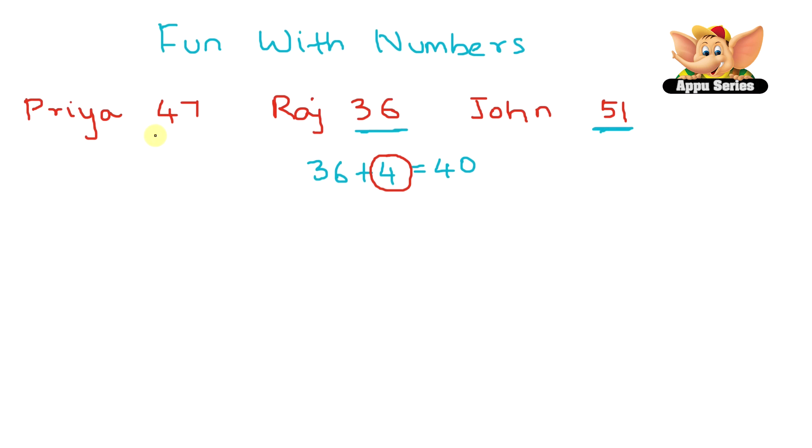Now, how many did Priya and John collect together? Let's try adding that up. We've got 47 plus 51 equals 98. So, John and Priya together collected 98 shells. Now, if we add 2 more shells to 98, how many shells do we get? Let's write it down. 98 plus 2 equals 100. That is how we write 100.